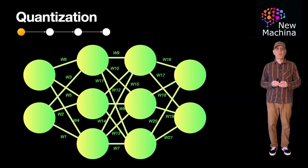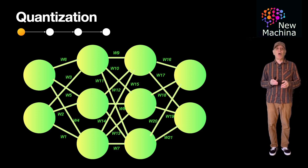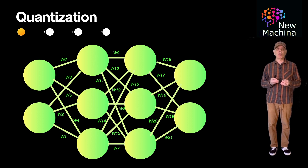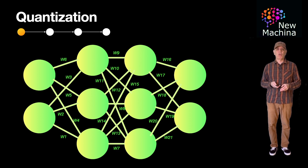Before I talk about quantization, I want to show you a simple artificial neural network which I think will help make it easier to explain this concept. In this simple neural network, you see artificial neurons and between each neuron you see connections, and each of these connections has an independent weight associated with it. These weights are also known as parameters. Depending on the neural network architecture and what layers the artificial neuron lives in, it can have other types of parameters such as a bias which is associated with an individual neuron.